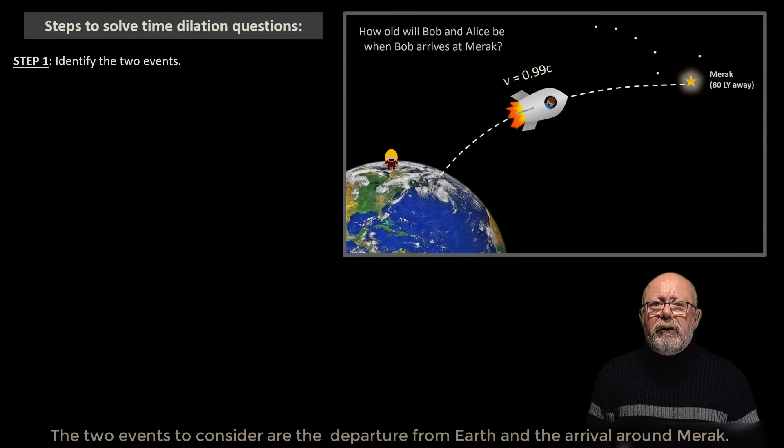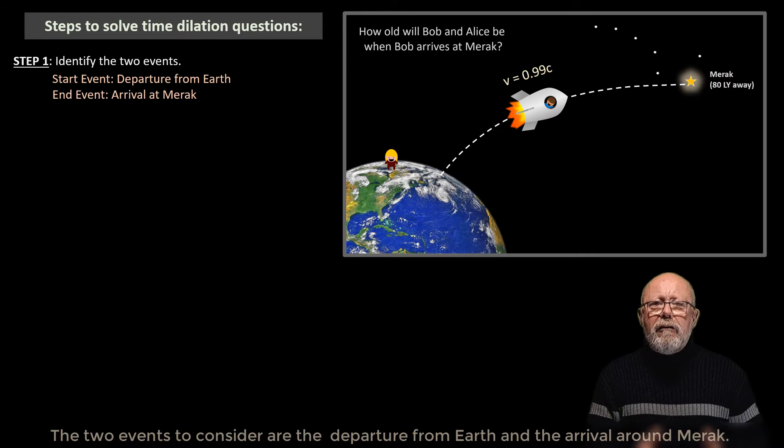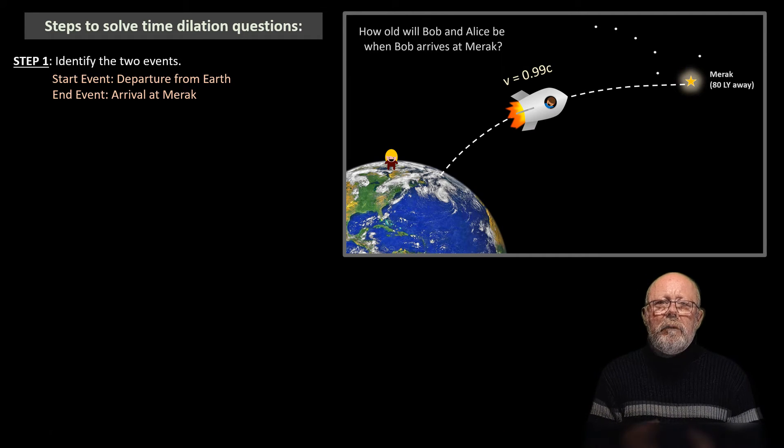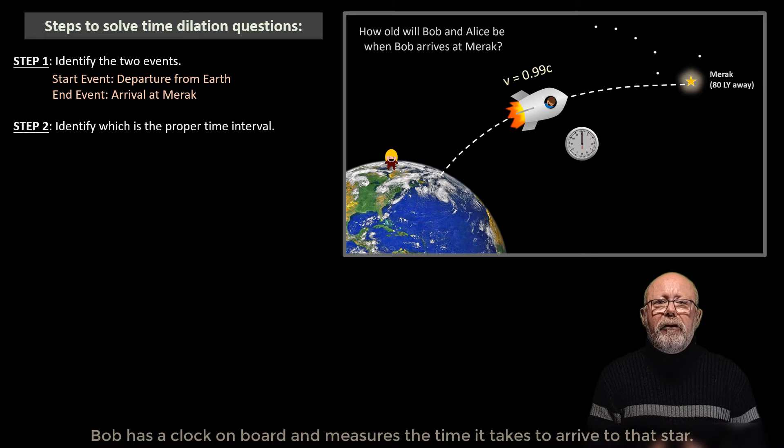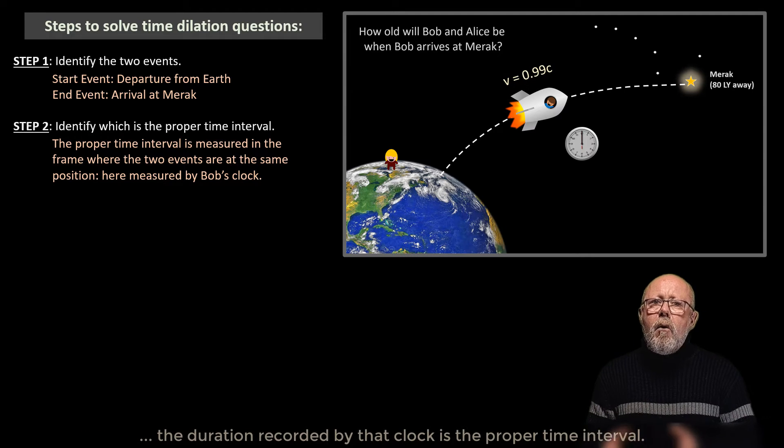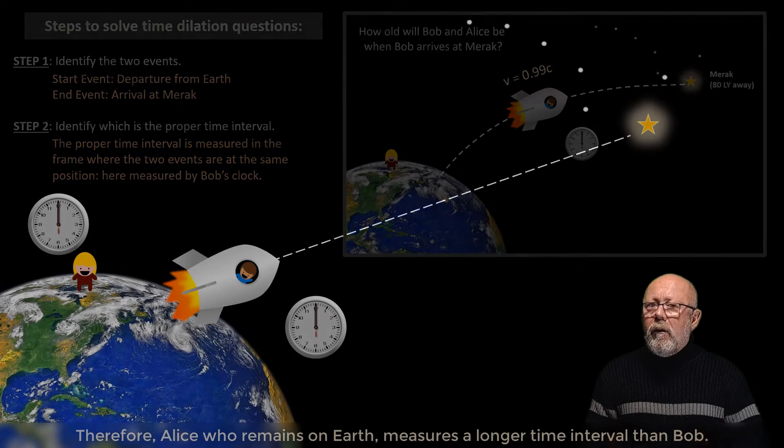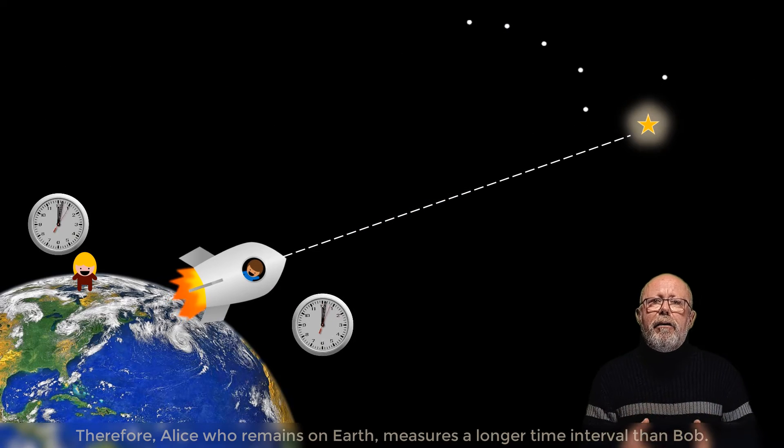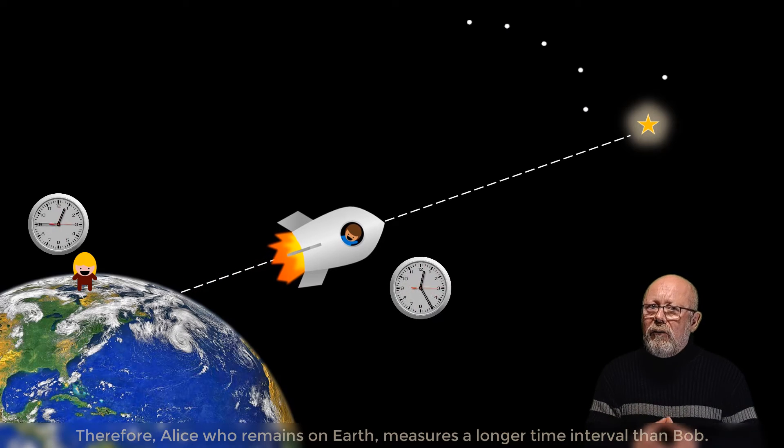The two events to consider are the departure from Earth and the arrival around Merak. Bob has a clock on board and measures the time it takes for him to arrive to that star. Because departure and arrival are at the same position within Bob's frame of reference, the duration recorded by that clock will be the proper time interval. Therefore, Alice, who remained on Earth, will measure a longer time interval than Bob.